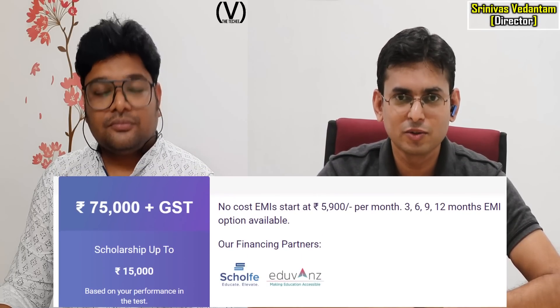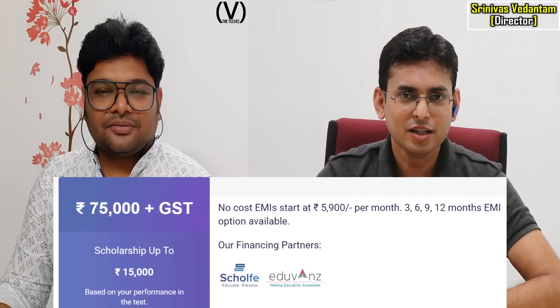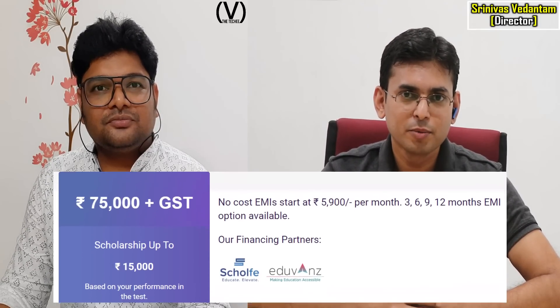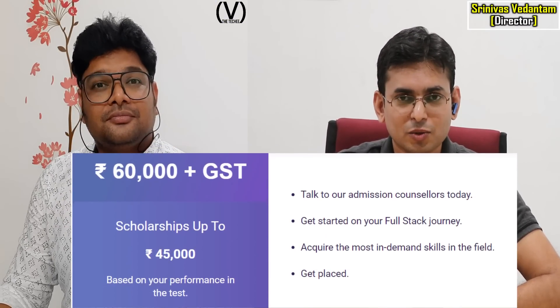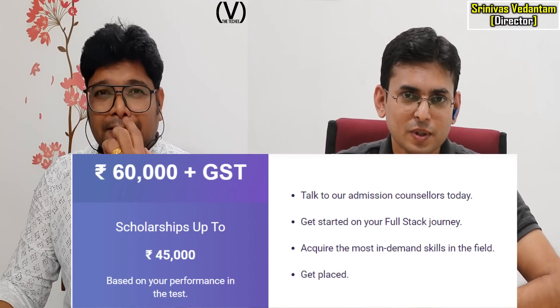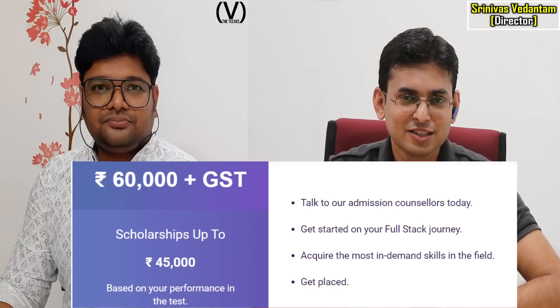Regarding fees — the data science program is 75,000 rupees, with scholarships available up to 15,000 rupees depending on merit. Similarly, the full-stack Java development program is 60,000 rupees, and there are higher scholarships — around 45,000 rupees available right now. Please check the website for exact scholarship details. Both programs are clearly aligned to job outcomes.